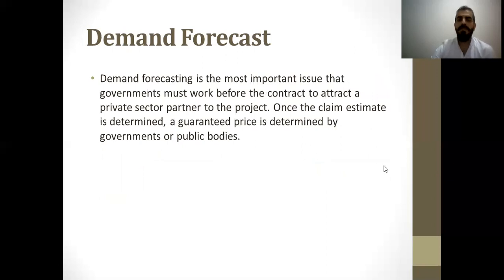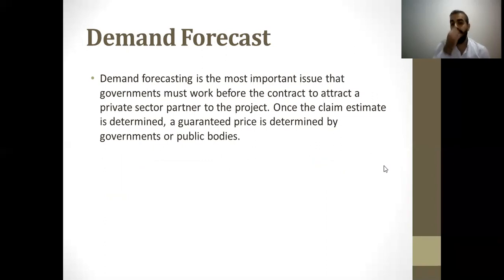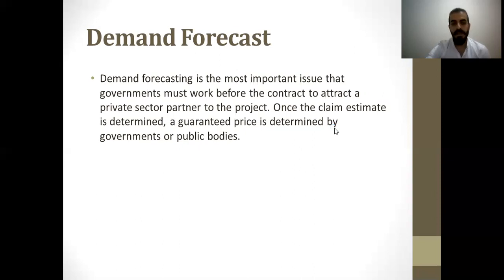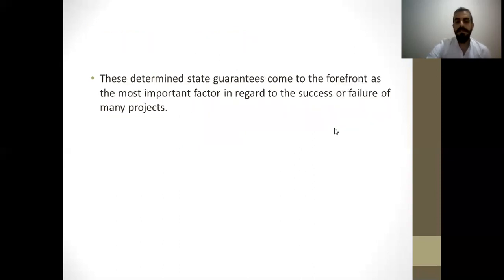Demand forecasting is the most important issue that governments must address before the contract to attract a private sector partner to the project. Once the demand estimate is determined, a guaranteed price is determined by governments or public bodies. This guaranteed price may be a toll for bridges or a usage fee for airports. These state guarantees are considered the most important factor regarding the success or failure of many projects.